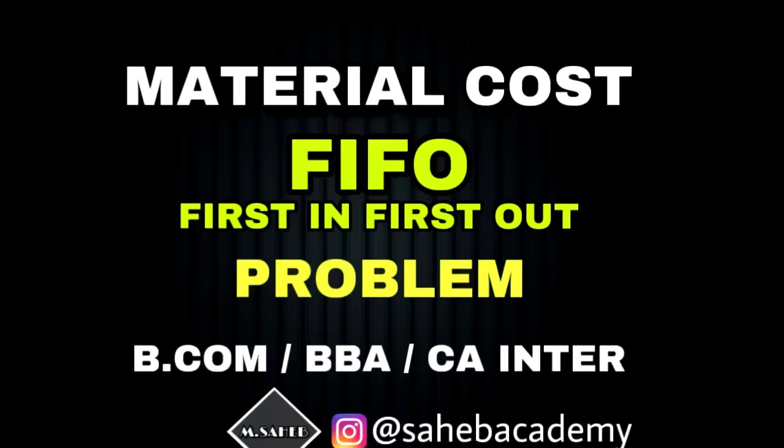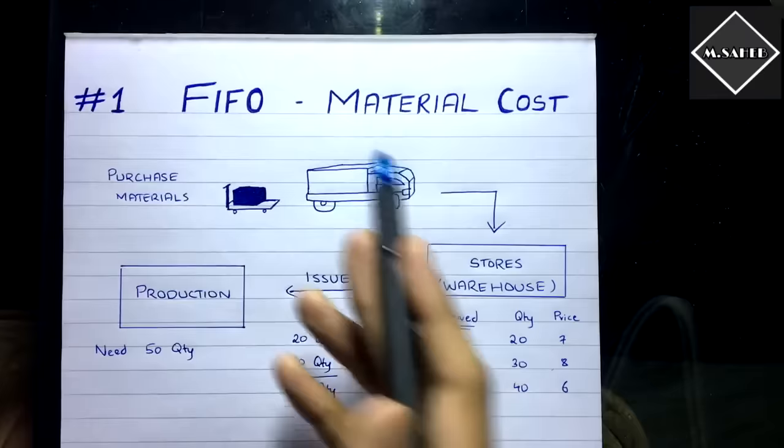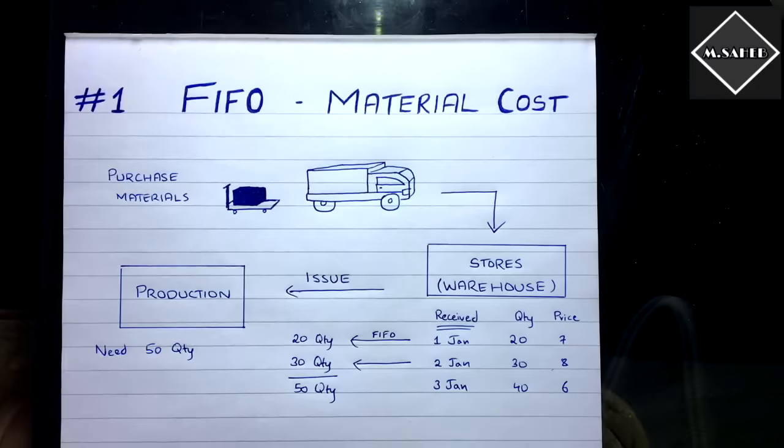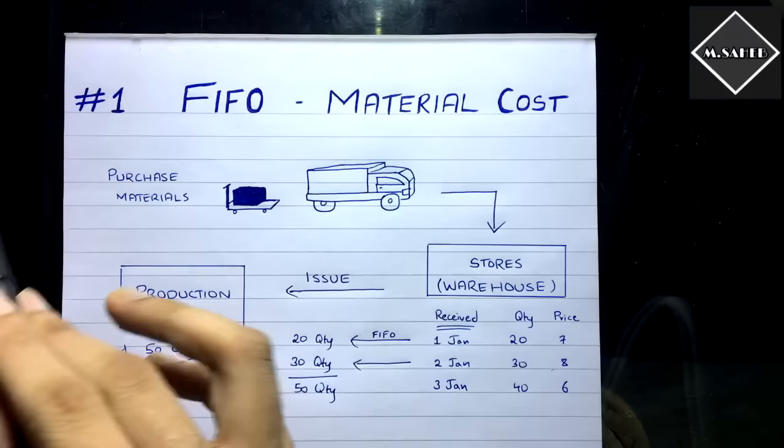Hi everyone. In this video we are going to start this new topic of material costing — that is the FIFO method of inventory valuation. So what is FIFO? First In First Out method of inventory valuation. In FIFO method, whatever comes into our warehouse first has to go out first.